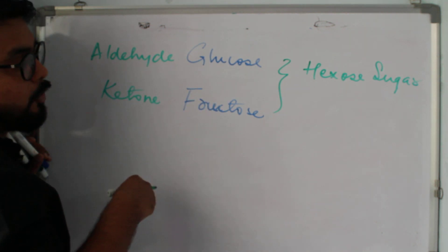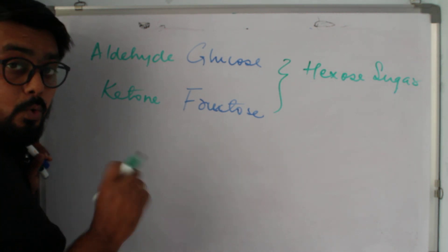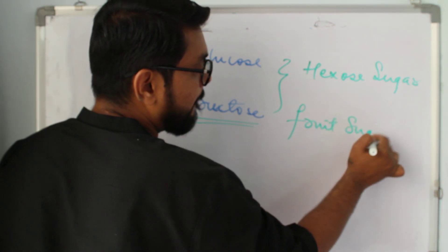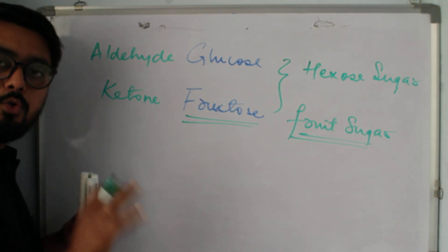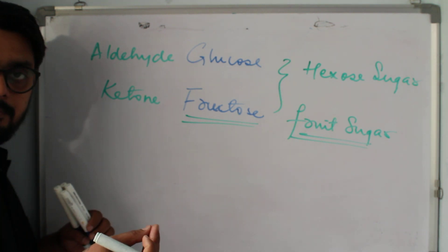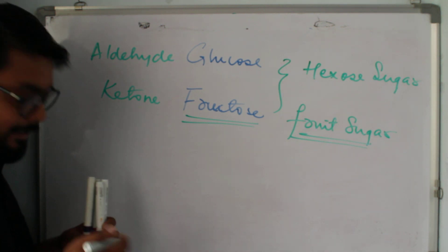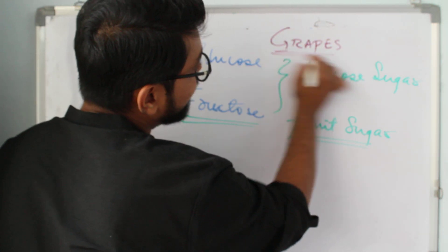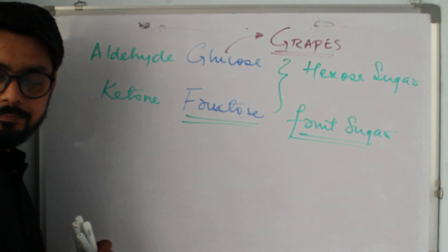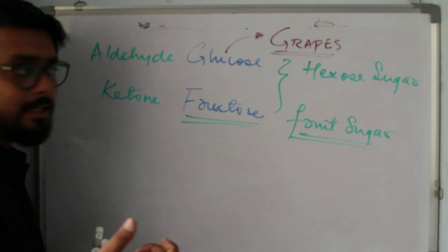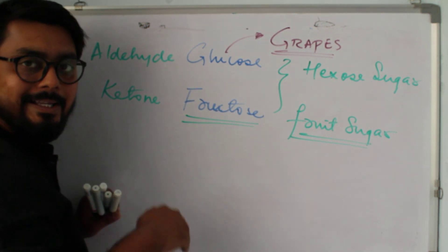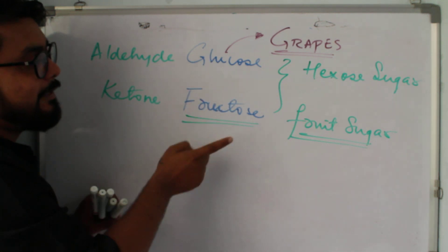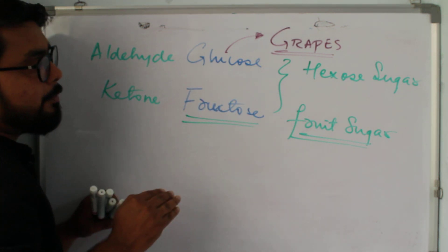We also discussed the Fischer projection and the Haworth projection. One important thing to know is that fructose is present in fruits — it's a fruit sugar. So all your fruits contain fructose. But there's an exception: grapes contain glucose, not fructose.